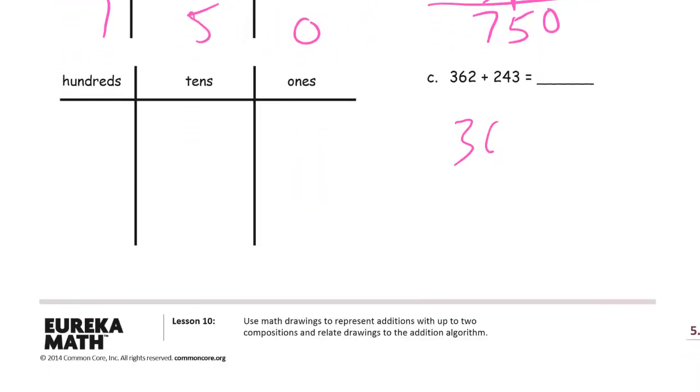Three hundred sixty-two plus two hundred forty-three. Two plus three is five. Six plus four in our tens digits is ten tens which is a hundred. There's our hundred composed over here with the other hundreds digits. And add this, 3 plus 2 is 5, one more is 6.